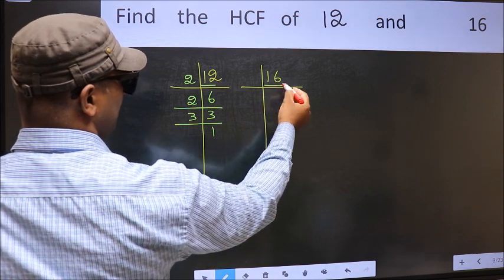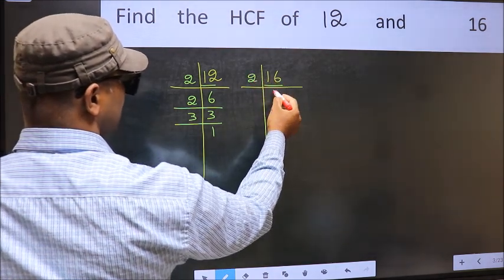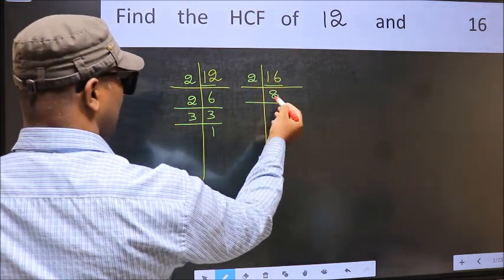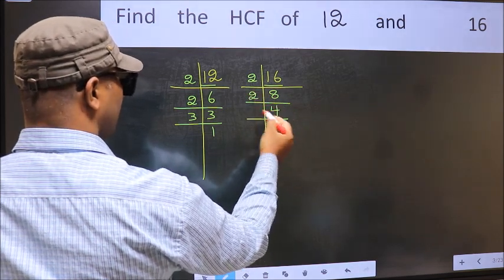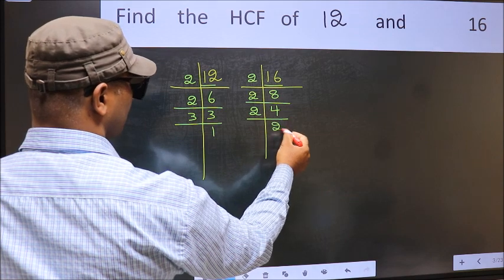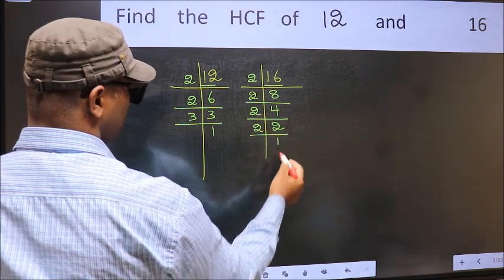Now the other number. 16 is 2 times 8. 8 is 2 times 4. 4 is 2 times 2. 2 is a prime number.